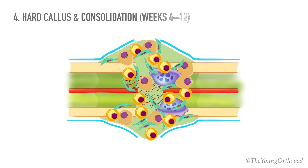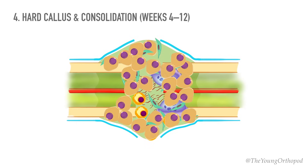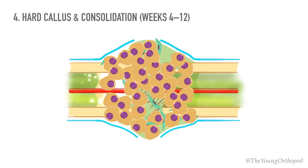Bone formation begins within the soft callus where the strain is lowest. Bone can be formed in two ways: by intramembranous ossification and by endochondral ossification. Calcium is laid down in the matrix and the callus then becomes visible on radiographs.